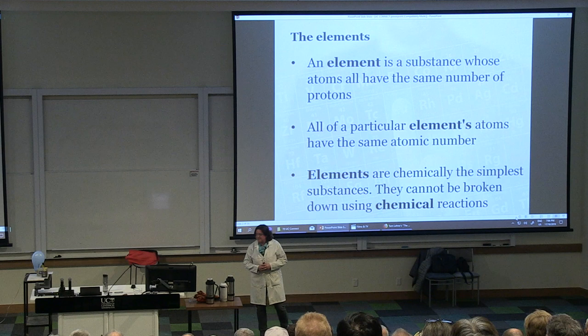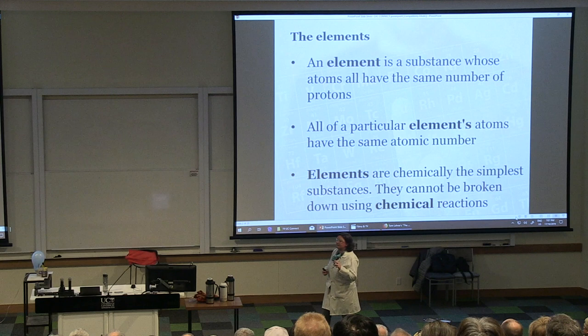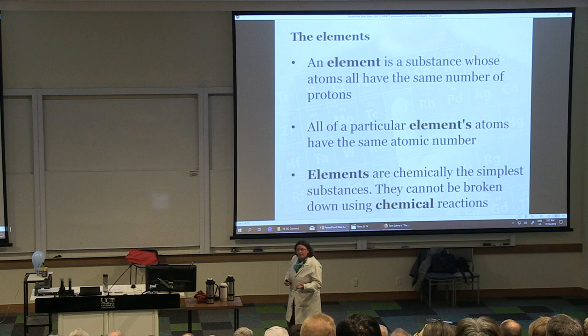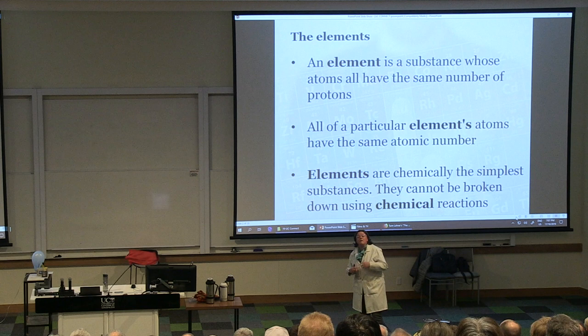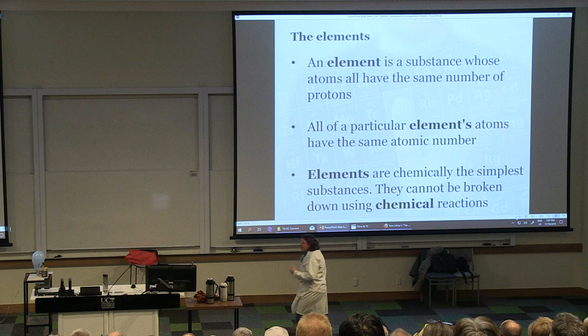An element is just a substance where the atoms all have the same number of protons — positively charged particles in the nucleus. That means they all have the same atomic number, because the number of protons correlates with the atomic number of the element. So hydrogen has one proton, atomic number one; helium, two protons, atomic number two; and so on. Elements are the simplest substances chemically that we know — we can't break them down any further through a chemical reaction.